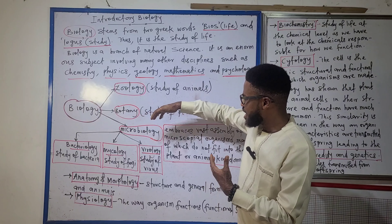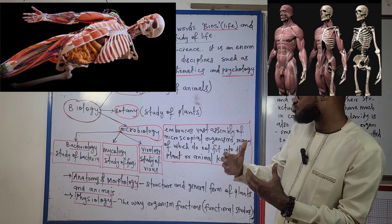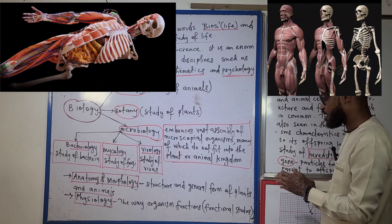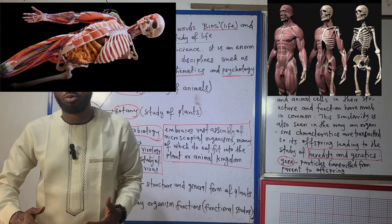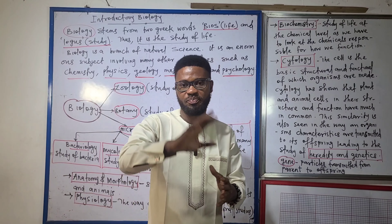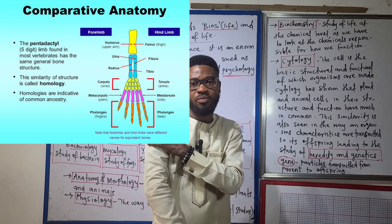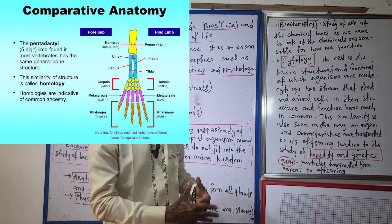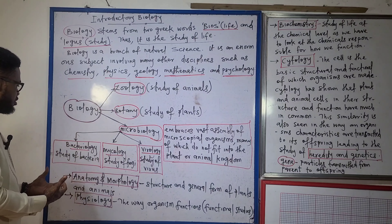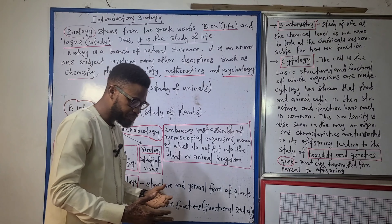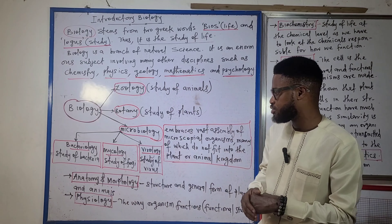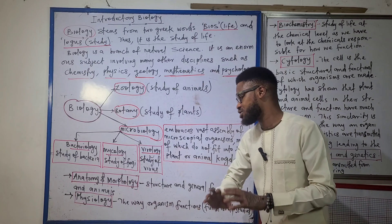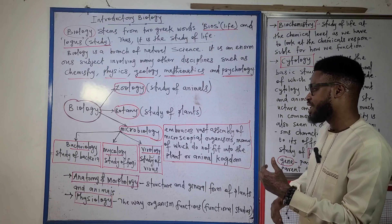Over time, biology moved away from zoology, botany and microbiology into looking at the shapes, structure and forms of animals and plants — that is where anatomy and morphology come in. For example, take humans: the pentadactyl limb refers to the bones of the arm — the humerus, the radius and ulna, and the phalanges. Imagine being injured or having a broken bone — without a good knowledge of anatomy and morphology, how do we get the bone back into function?